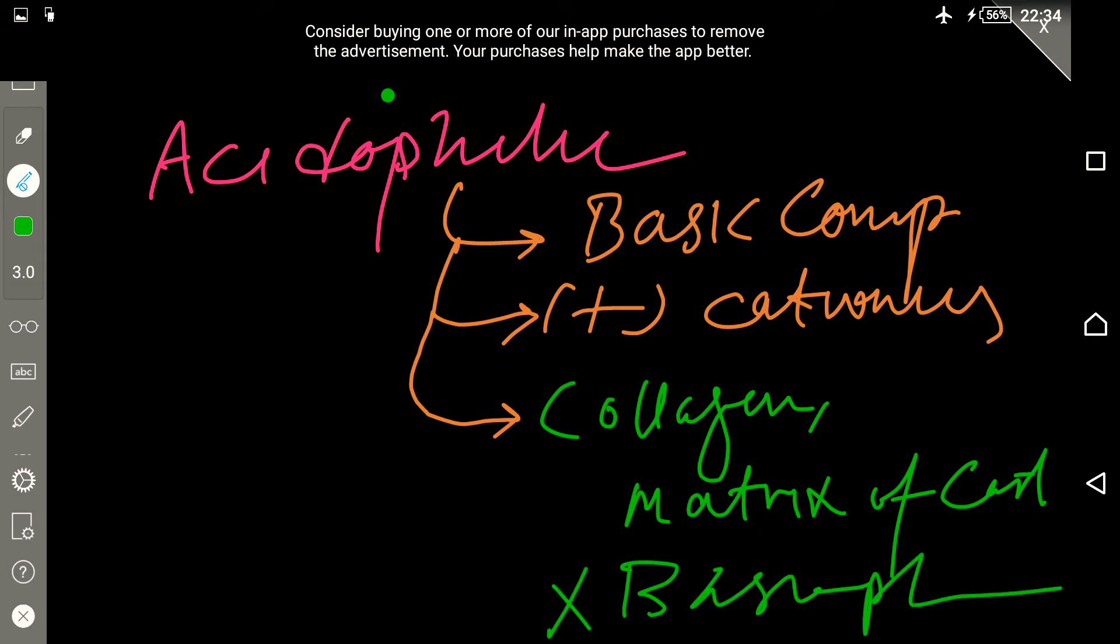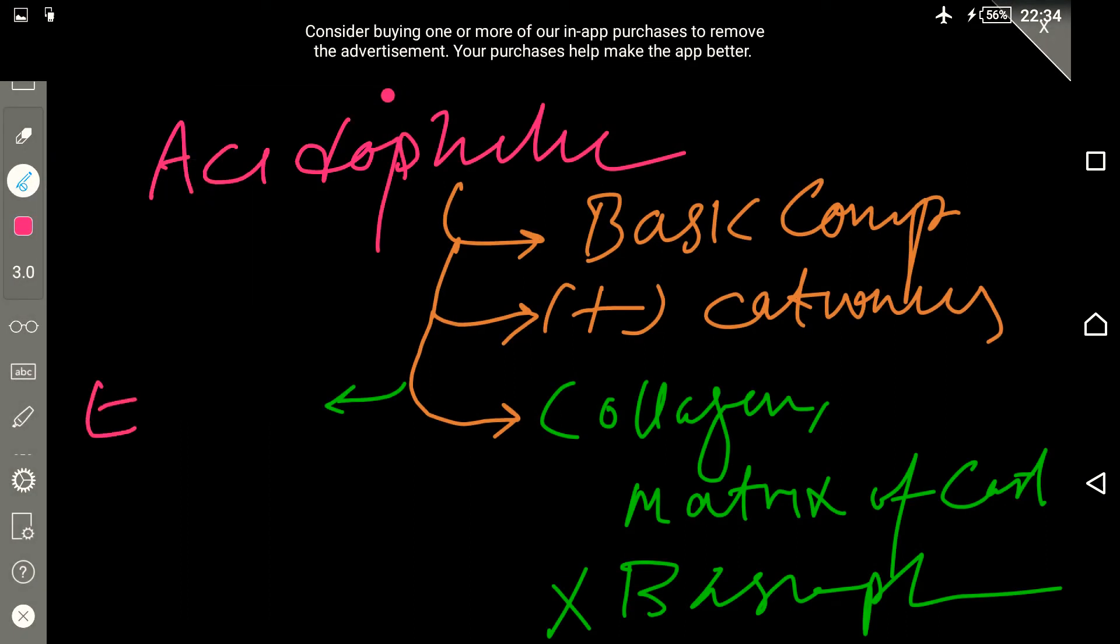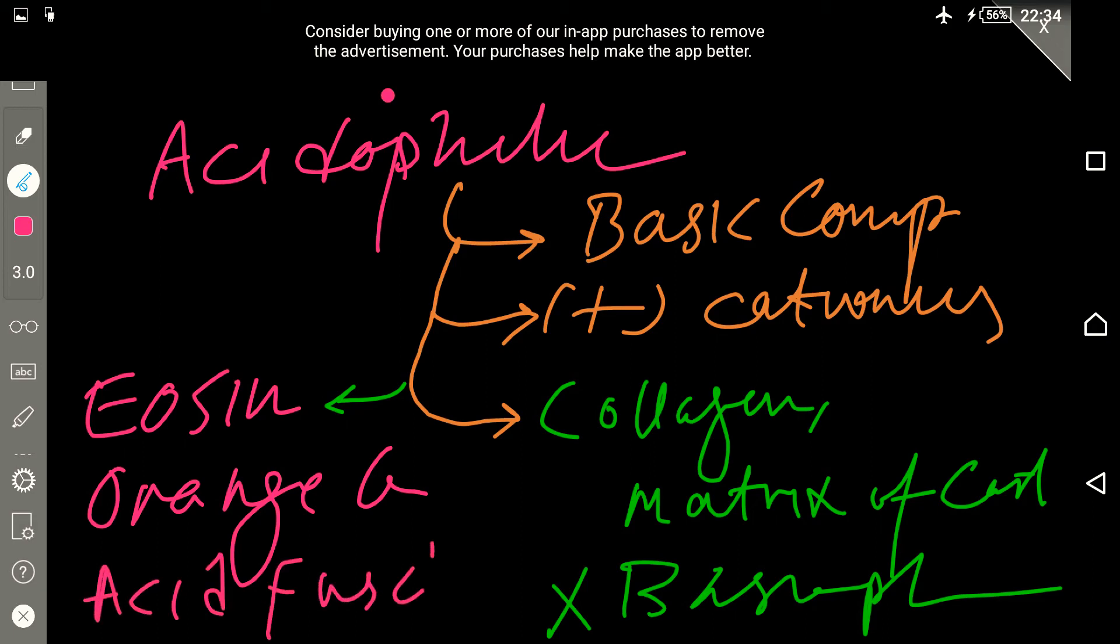The dyes that are used in this part are eosin, which is a very famous one, orange G, and acid fuchsin. These are the three dyes that are used as acidophilic dyes.